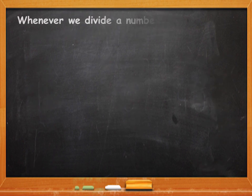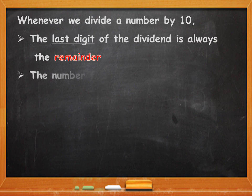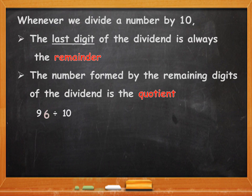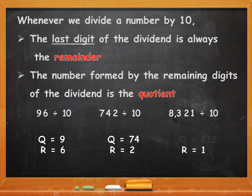So what did you observe? Whenever we divide a number by 10, the last digit of the dividend is always the remainder, and the number formed by the remaining digits of the dividend is the quotient. As you saw in the examples: 96 by 10 — the last digit 6 is the remainder and the quotient is 9. 742 by 10 — the last digit 2 is the remainder and the quotient is 74. And 8321 by 10 — the last digit 1 is the remainder and 832 is the quotient.